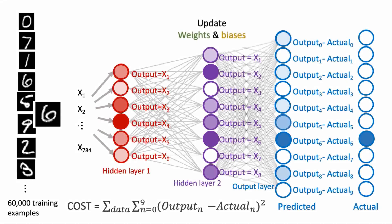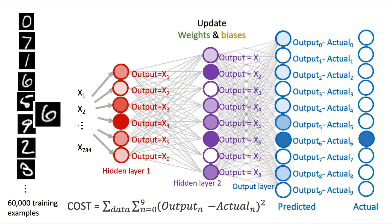We next move backwards along the network, and we want to update the weights and biases for the second hidden layer. Using the chain rule, we calculate the gradient of the change in cost with respect to the weights and biases of the second hidden layer, and we use this gradient to update the weights and biases of the second hidden layer.